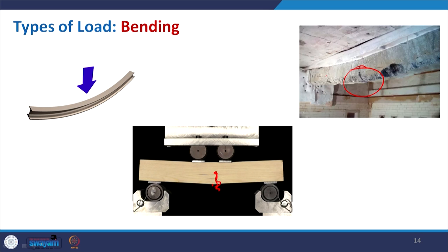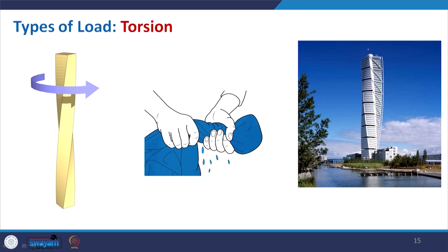A real photograph shows excessive bending deformation — the tension side and the compression side are visible. For torsion — a very good daily-life example is squeezing or twisting a towel to remove water during washing. We give pressure in opposite directions and it gives a twisting form. Applying this to buildings — this twisted building form is very important especially for high-rise buildings where lateral load plays a crucial role.